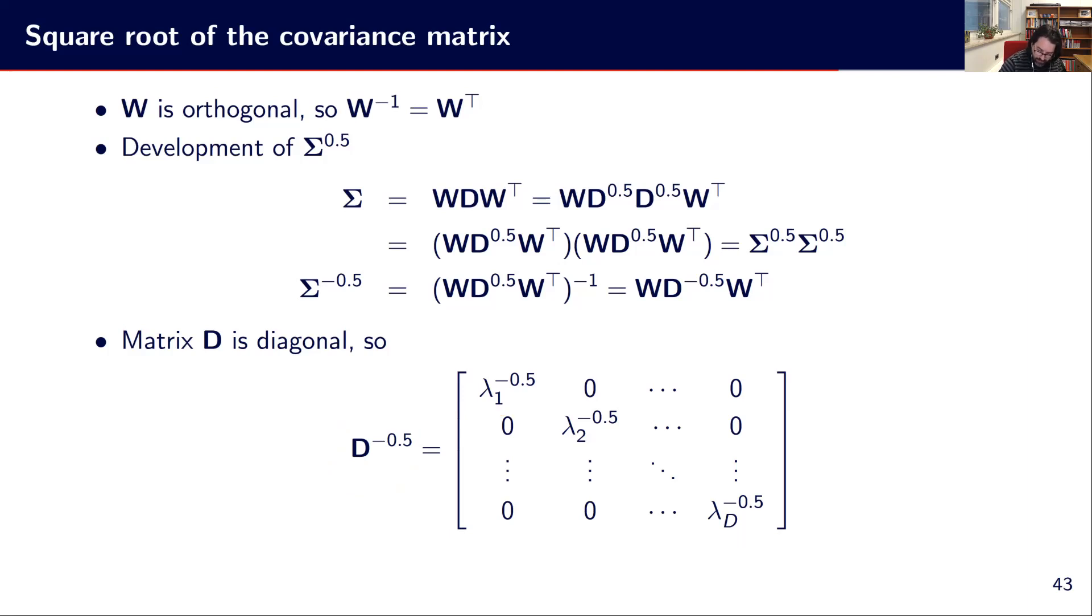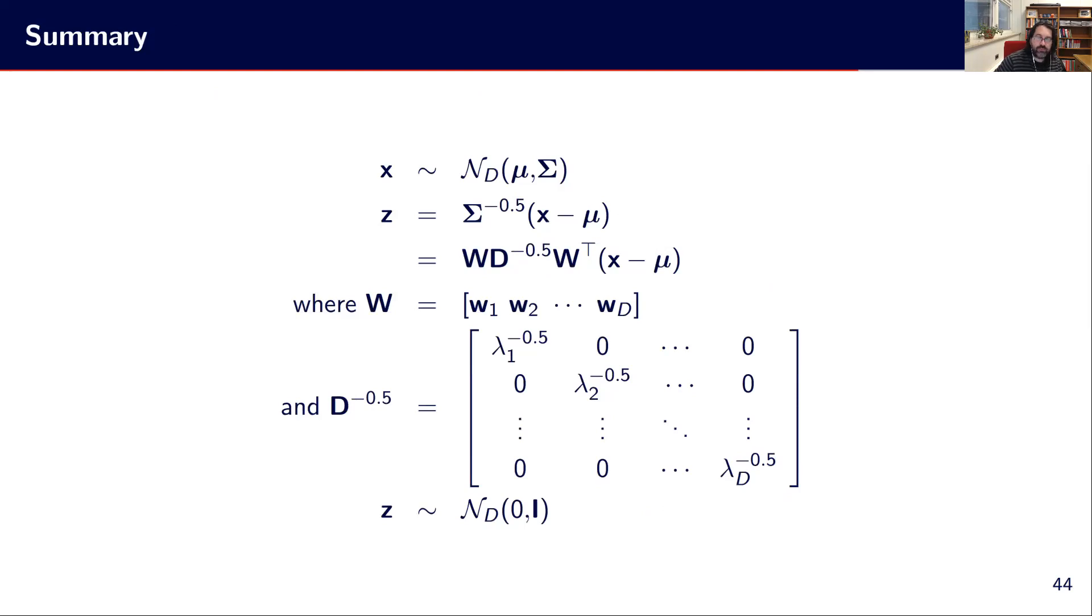Here's the summary for doing a whitening transformation. We have some data following a normal distribution in d dimensions with μ and Σ parameters. We want to transform it to get unitary covariance centered on the origin. We get W as the eigenvectors of our covariance matrix, and we have the matrix D^(-0.5) based on eigenvalues. With that, we achieve a z following a normal distribution of zero mean and identity covariance.